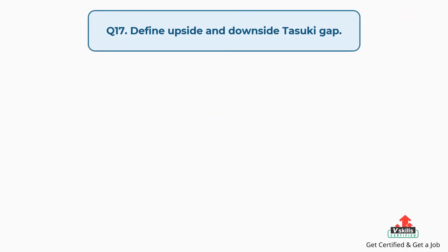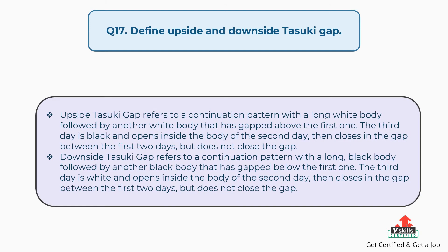Question number 17: Define upside and downside Tasuki gap. Upside Tasuki gap refers to a continuation pattern with a long white body followed by another white body that has gapped above the first one. The third day is black and opens inside the body of the second day, then closes in the gap between the first two days, but does not close the gap. Downside Tasuki gap refers to a continuation pattern with a long black body followed by another black body that has gapped below the first one. The third day is white and opens inside the body of the second day, then closes in the gap between the first two days, but does not close the gap.